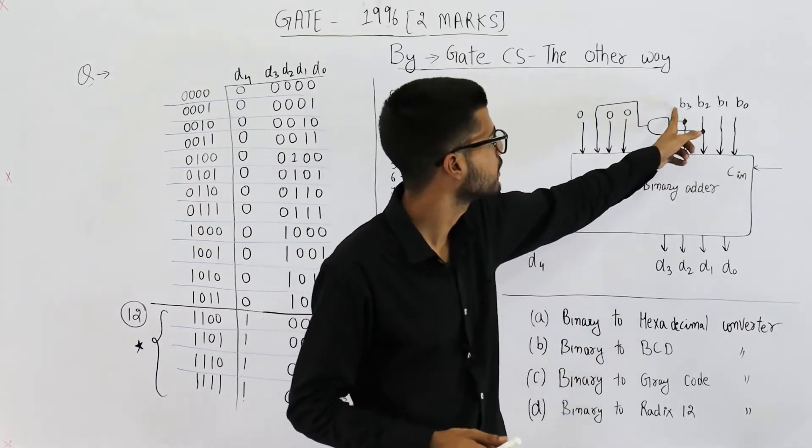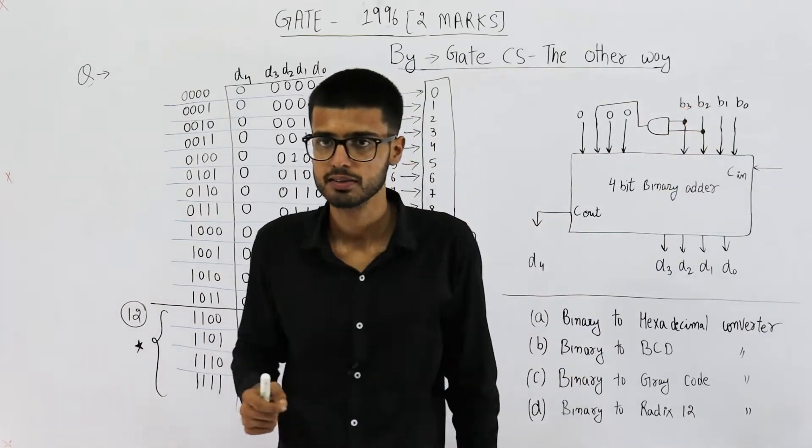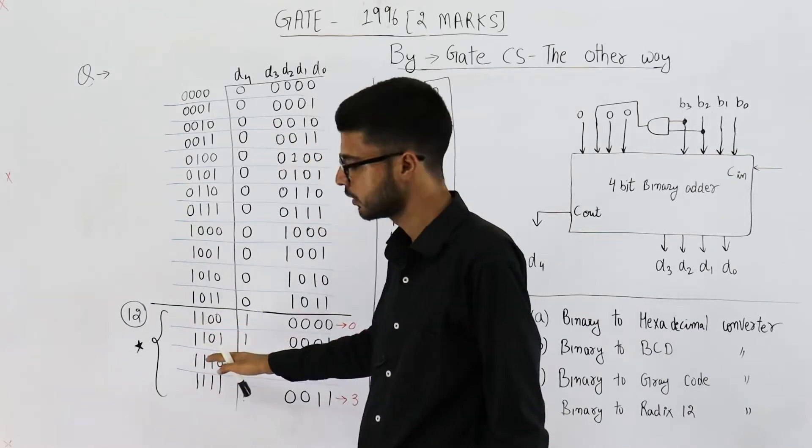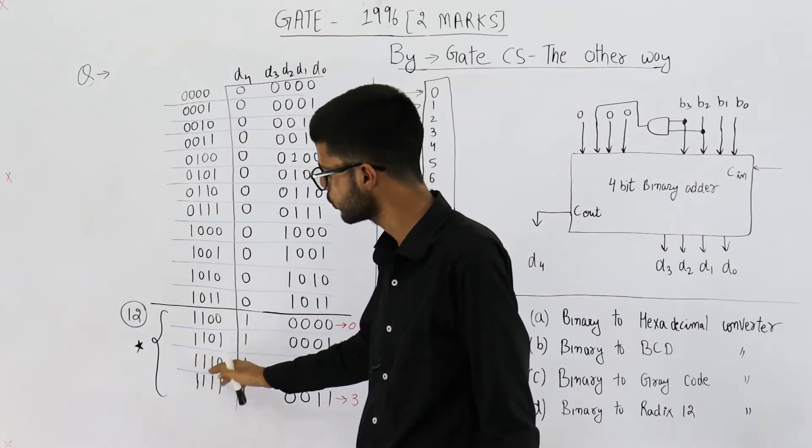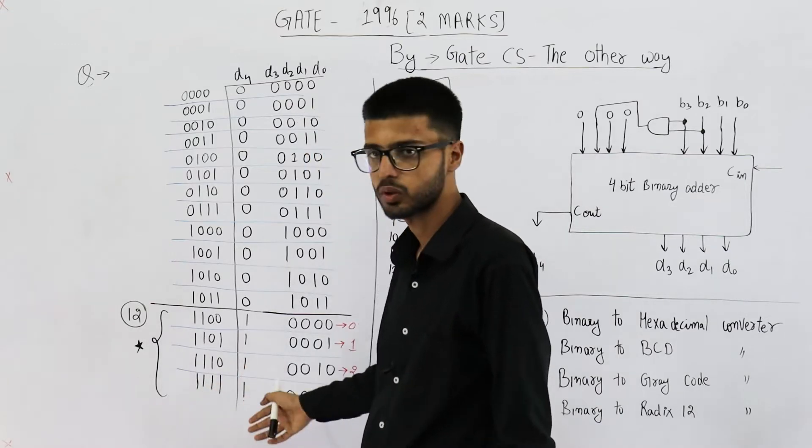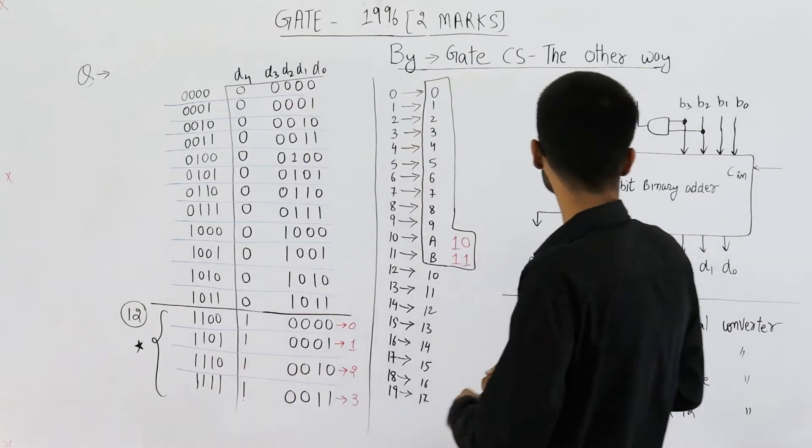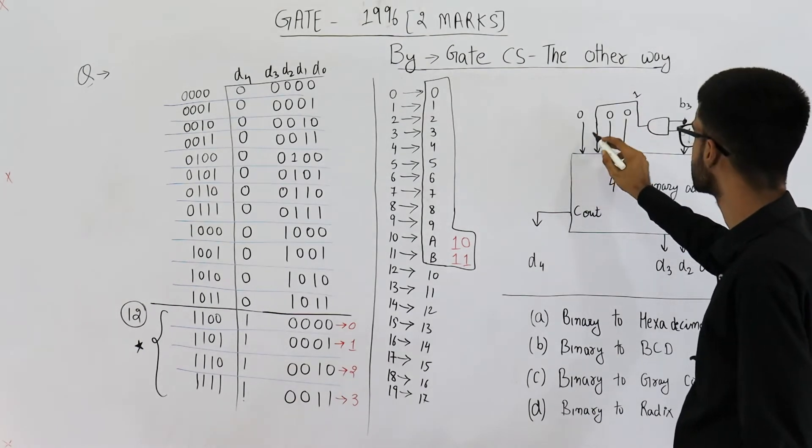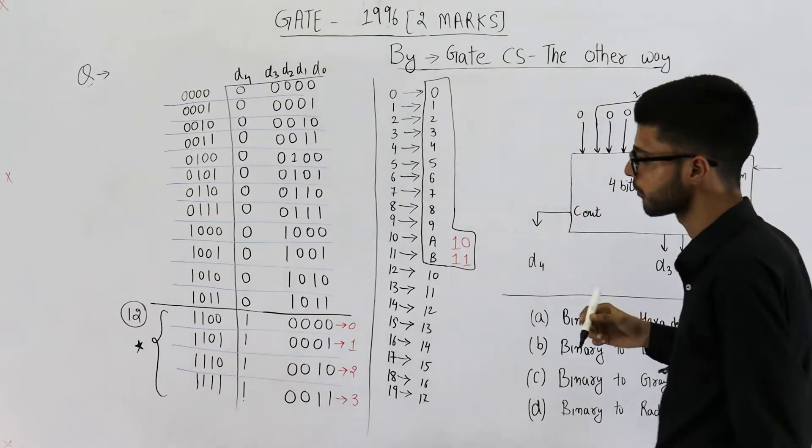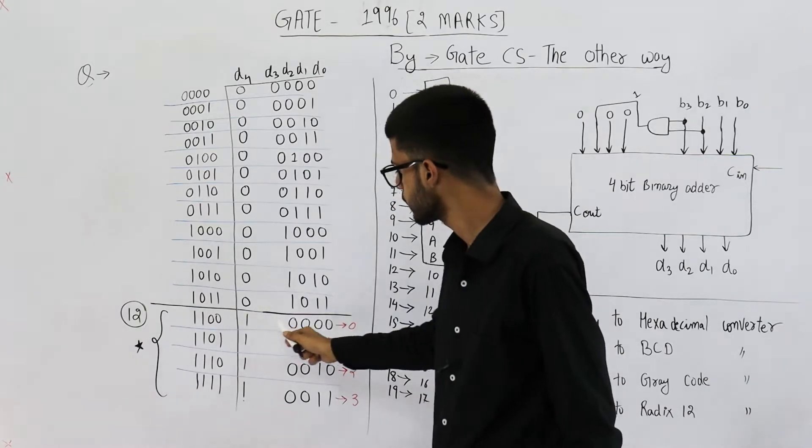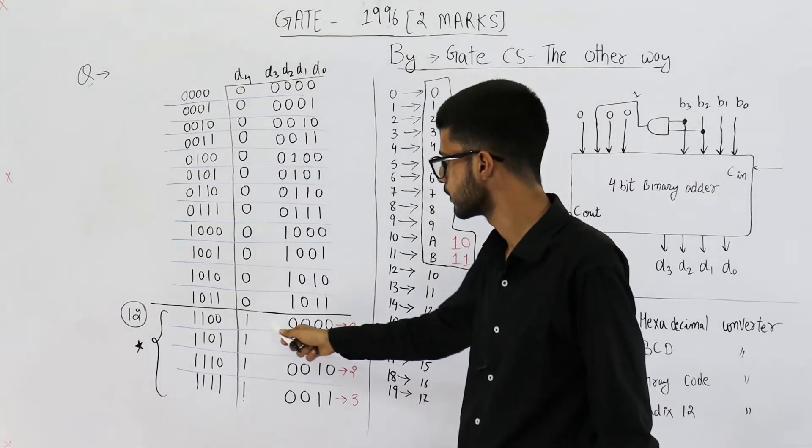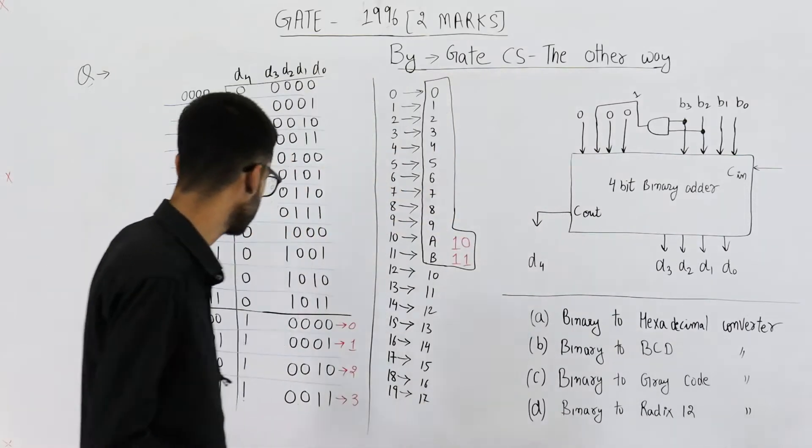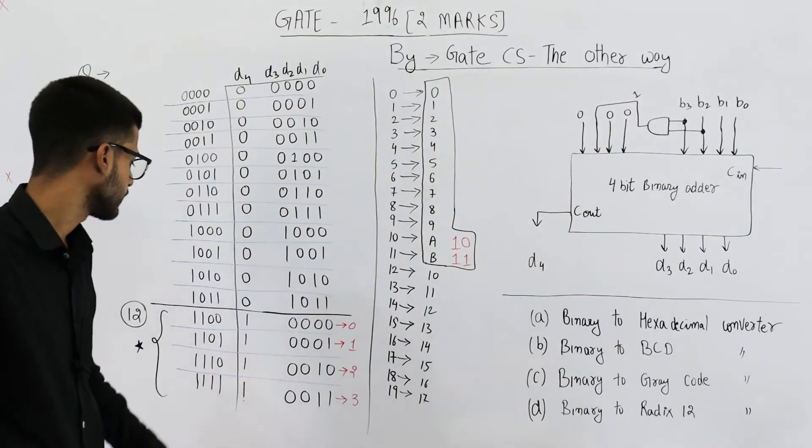But when both of these bits are 1, B3 and B2 both are 1. See, these 4 cases, 1100 and 1101, 1110, 1111. Only in these 4 cases, this AND gate will output 1. That means we are adding 0100 which is 4. So 12 plus 4 is 16. This is 1 followed by 4 zeros which is 16. Similarly, 17, 18, 19.